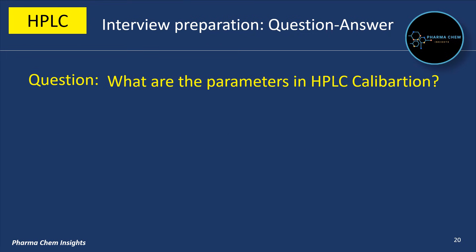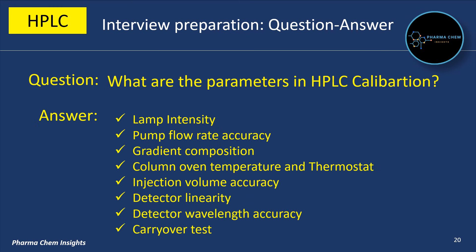What are the parameters in HPLC calibration? These are the parameters in HPLC calibration: first is lamp intensity, second is pump flow rate accuracy, third is gradient composition, then column oven temperature and thermostat, injection volume accuracy, detector linearity, detector wavelength accuracy, and carry over test.